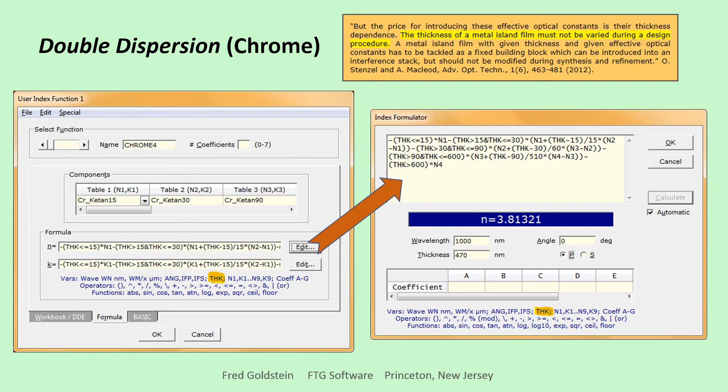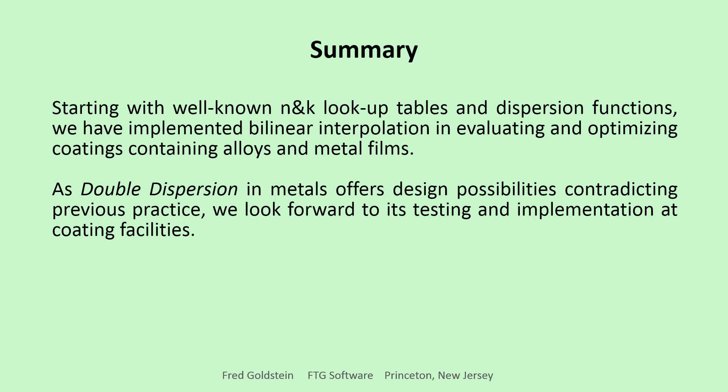Here, the same index formulator is utilized. Note THK listed as a variable. Since wavelength dispersion is included in each table, 15 nanometers, 30 nanometers, etc., we only need to add thickness dispersion.